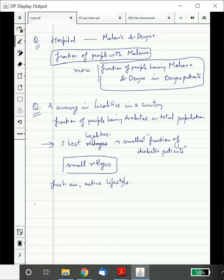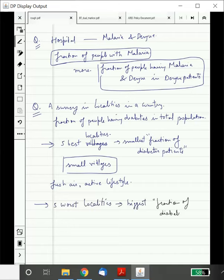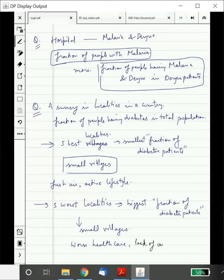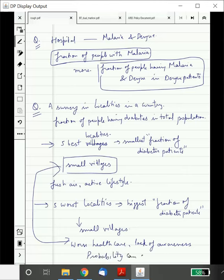But it also turned out that the five worst villages, or I should say five worst localities, that means the fraction of diabetes patients was the biggest in these localities. These were also among small villages. If this was given to you independently, you might have blamed it on worse healthcare or awareness issues. But now keeping both these statistics in mind, it seems that probability can explain it. For that again we have to learn the course.